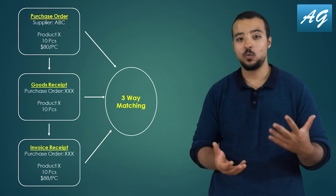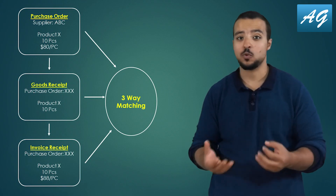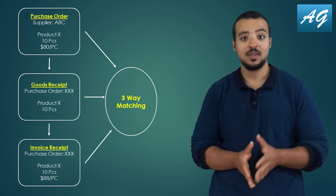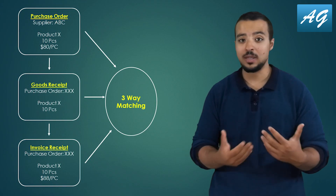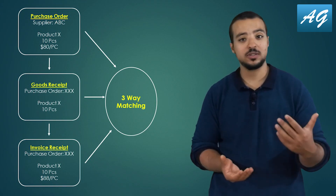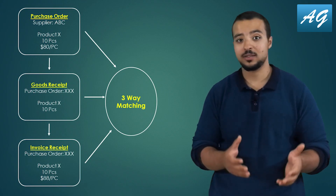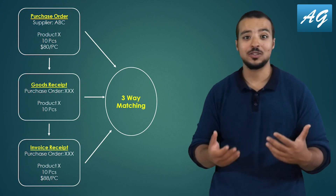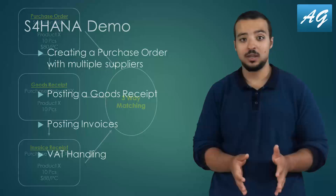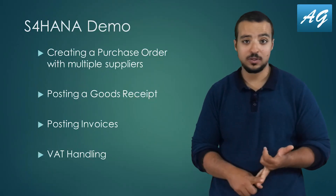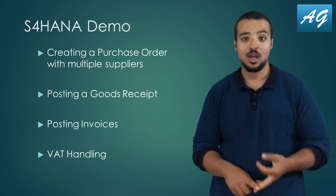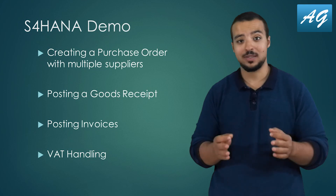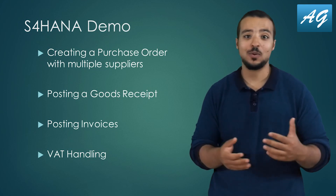The accountant compares the invoice against the purchase order and the goods receipt — this is called three-way matching. For example, if we agreed to buy product X for 10 USD but the invoice charges 12 USD, the accountant spots this and contacts the supplier. If the invoice is approved it gets posted; otherwise the supplier is informed it won't be posted because it doesn't match what was agreed. I'll also demonstrate how to post separate invoices to separate suppliers on the same purchase order and how to handle VAT.